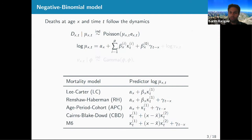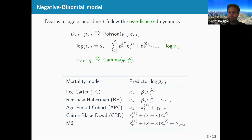We work in a standard log-Poisson framework, assuming that deaths are distributed as Poisson and specifying dynamics for the log death rates. In this paper we consider five mortality models: Lee-Carter, RH, APC, CBD, and M6. We do not use the standard Poisson but instead the over-dispersed Poisson — the negative binomial — adding a parameter phi that controls over-dispersion. When phi tends to infinity, you recover the Poisson; when phi is small, variance is much larger than the expectation.